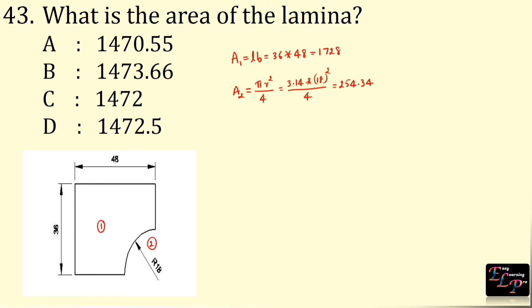In this surface, the quadrant is removed from the rectangle. So total area is A1 − A2: 1,728 − 254.34 = 1,473.66.